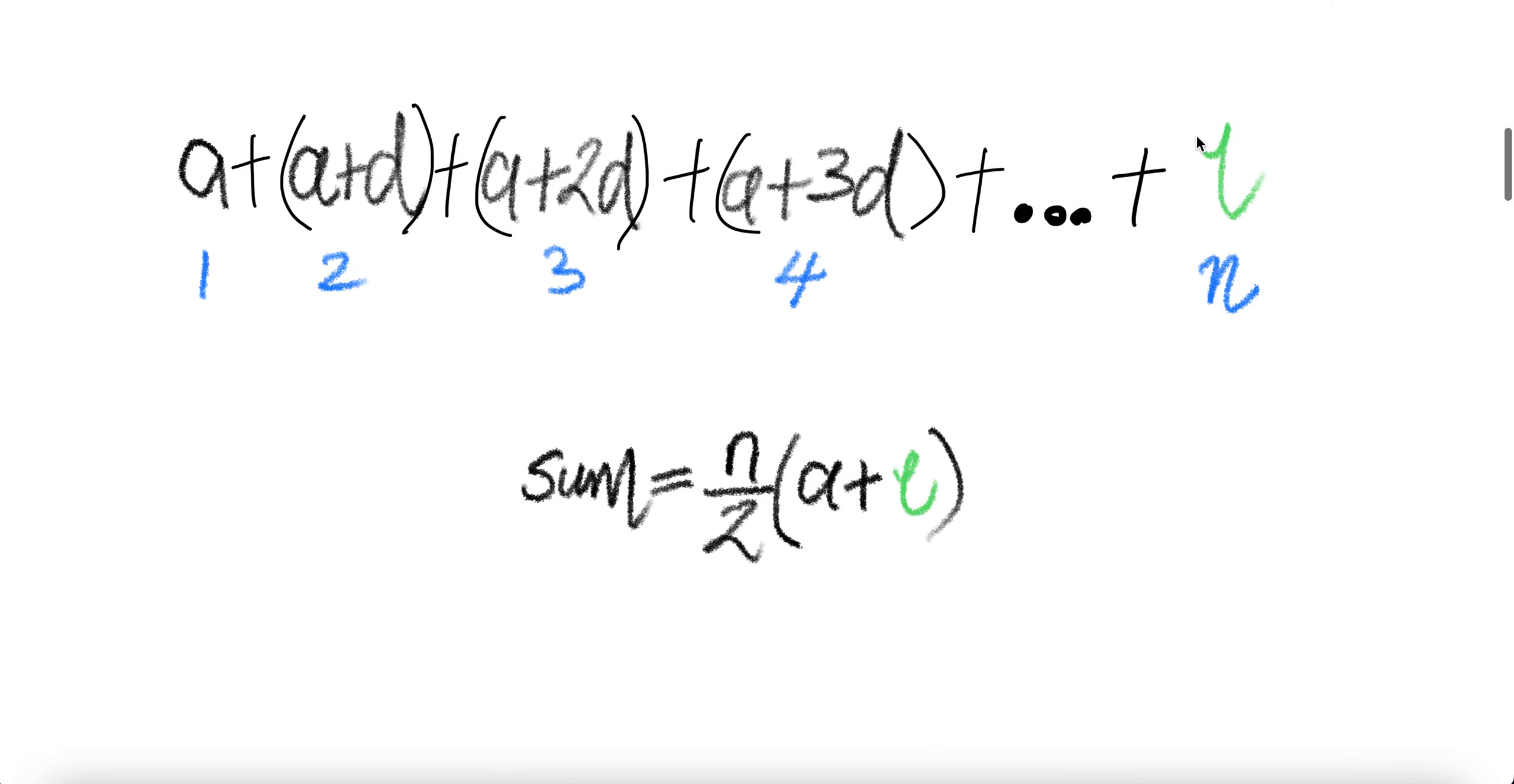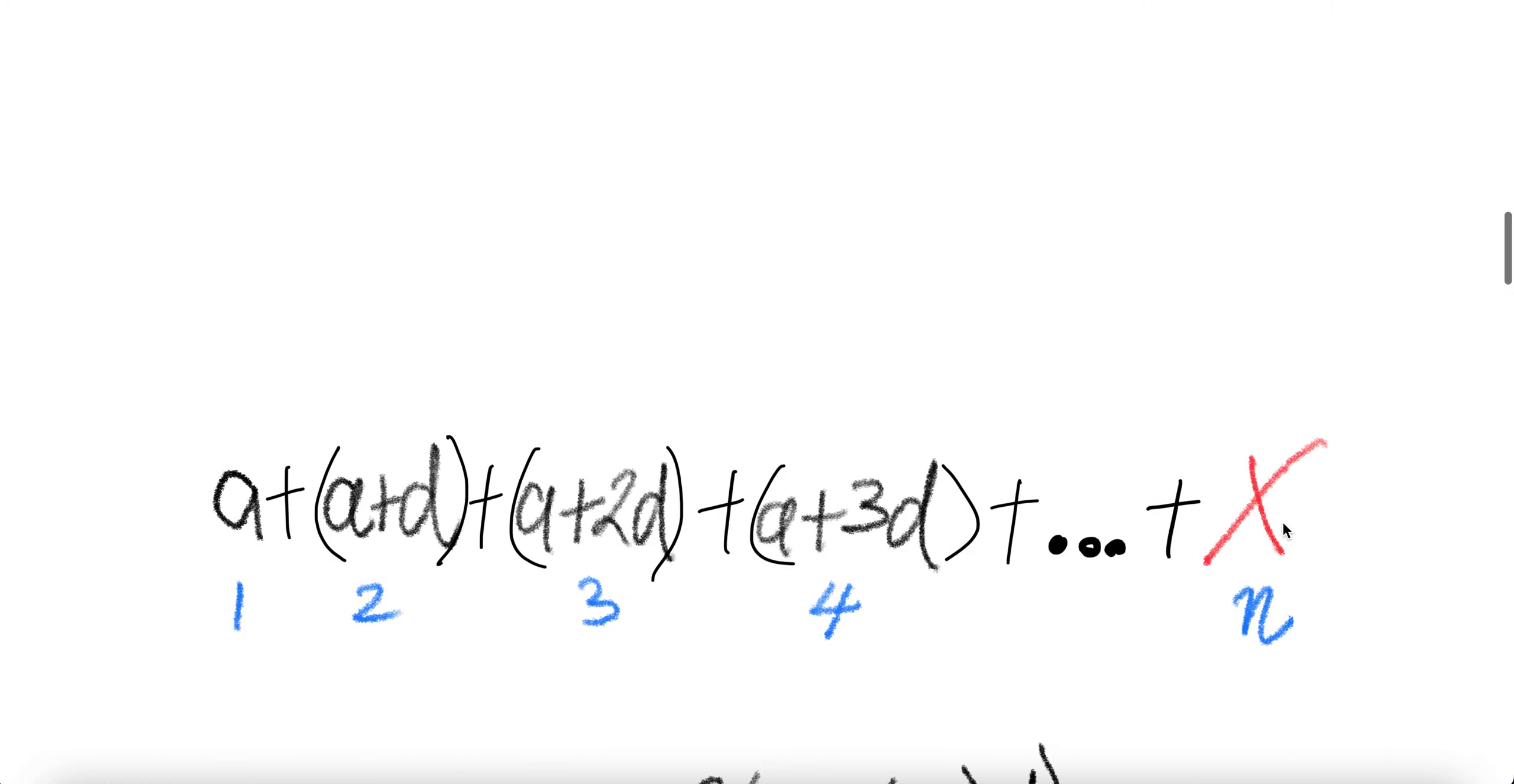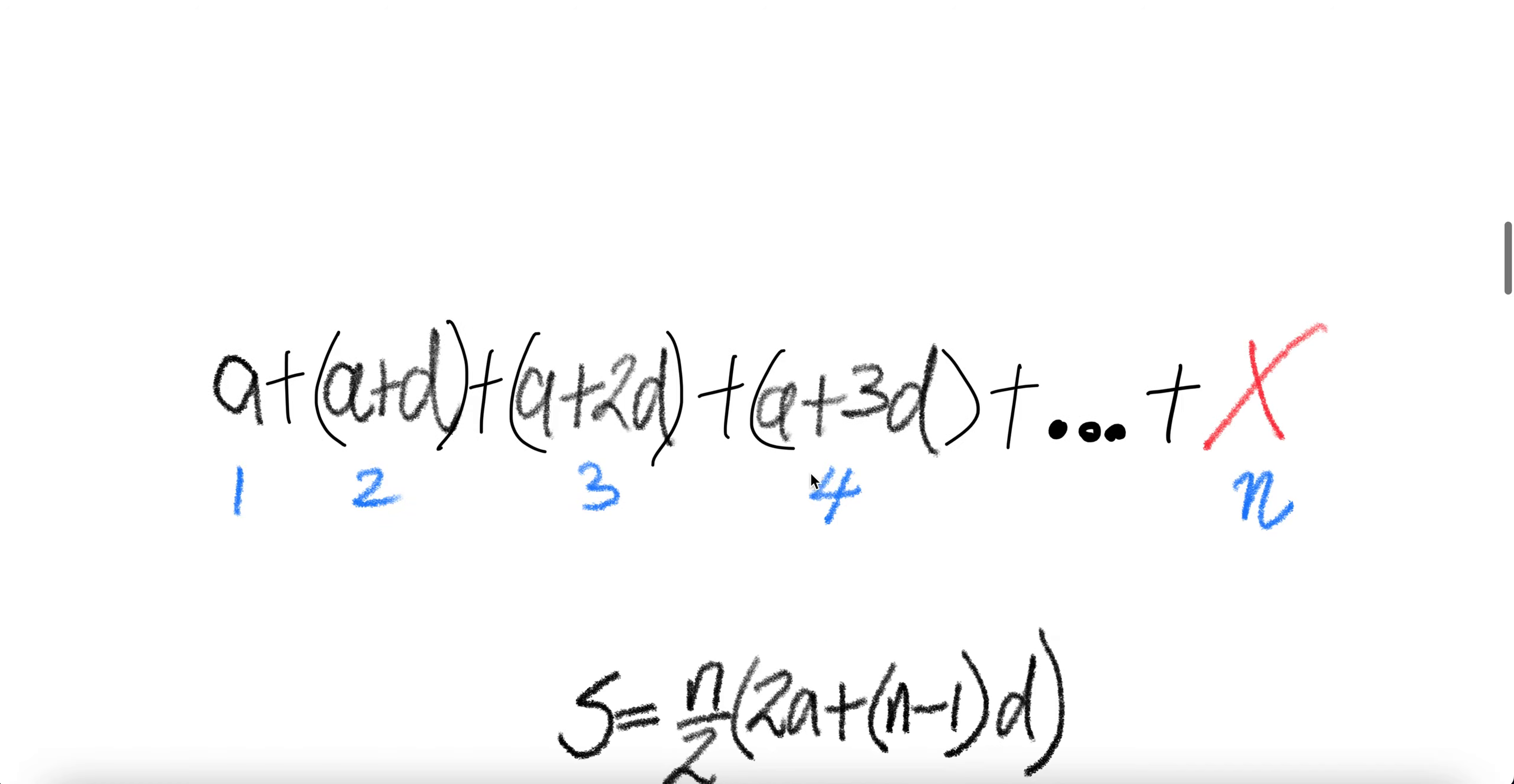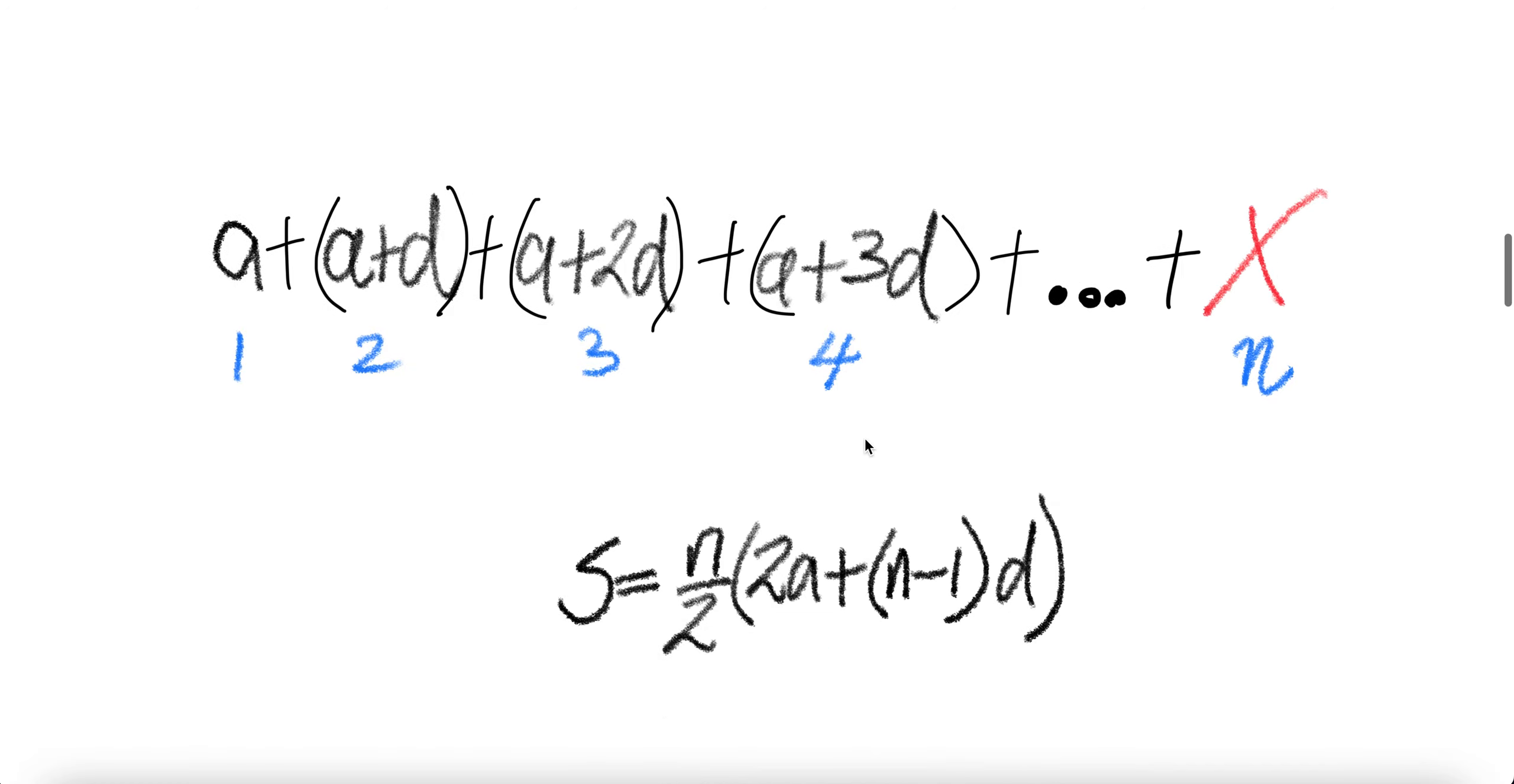This is when the nth term value is given. Say the nth term value is not given. The same problem. Now we have to use the other formula. So the other formula will be the number of terms divided by two, twice the first term plus number of terms minus one times the common difference D. This will also give you the sum without knowing that.